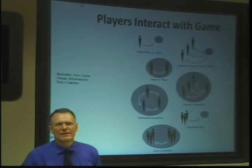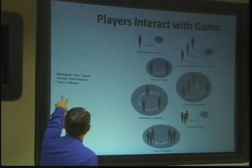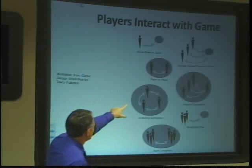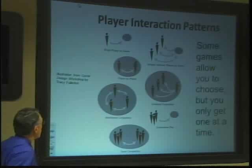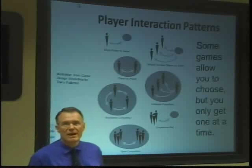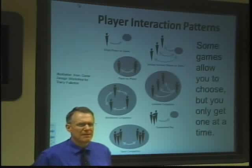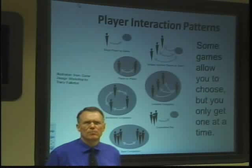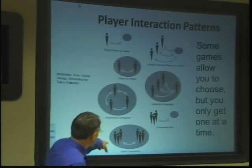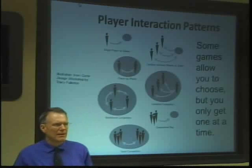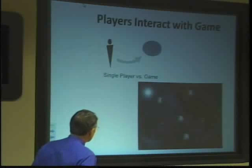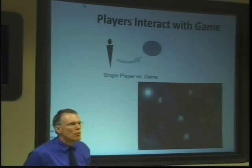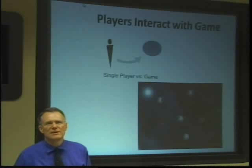Now let's talk about player interaction patterns — one of the topics covered in this chapter, with illustrations taken from Game Design Workshop by Tracy Fullerton. Some games allow you to choose between various player interaction patterns, though generally you only get one at a time. Single player versus game: Galactic Mail is an example — the game presents moons to land on and asteroids that kill you if you crash, and the player solves the puzzle of navigating from moon to moon.